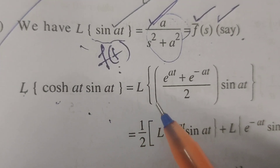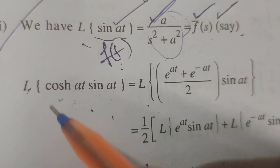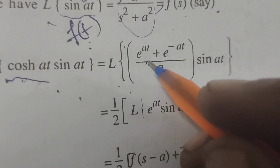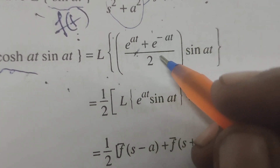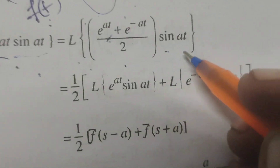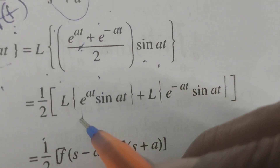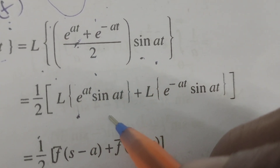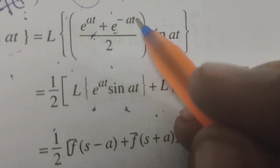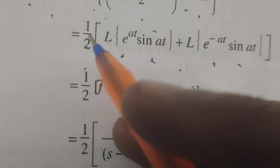Laplace transform of cosh(at) · sin(at): applying the hyperbolic formula, cosh(at) = (e^(at) + e^(-at)) / 2, into sin(at) as it is. So this becomes (1/2) into Laplace transform of e^(at)·sin(at) plus Laplace transform of e^(-at)·sin(at).